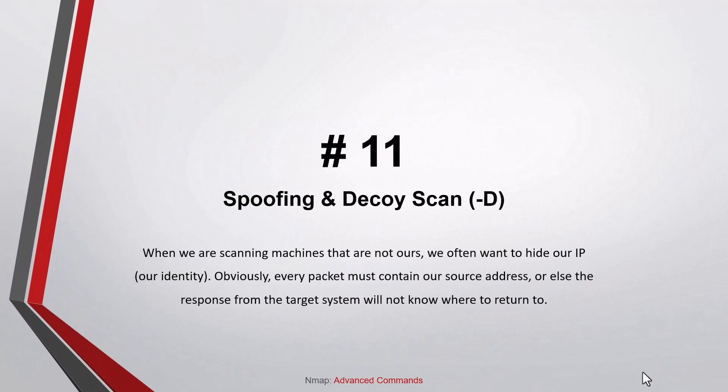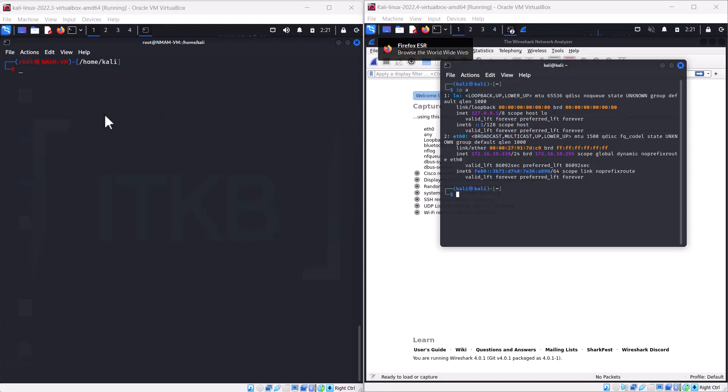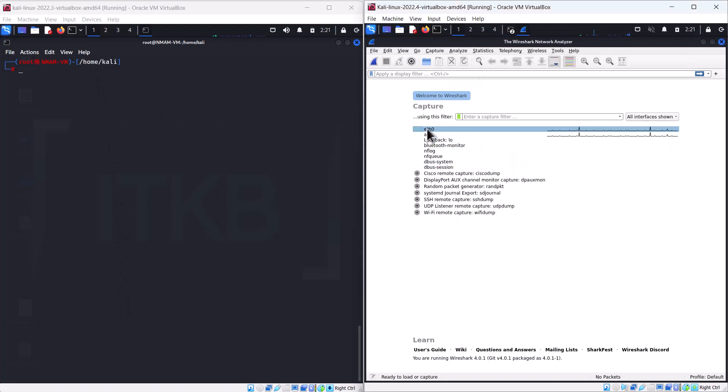Number eleven: Spoofing and Decoy scan. When scanning machines that are not ours, we often want to hide our IP address or identity. Every packet must contain our source address, otherwise the response from the target system won't know where to return. We can spoof our IP address with the -S switch in Nmap, but any response and information gathered will return to the spoofed IP, which is not very useful for information gathering.